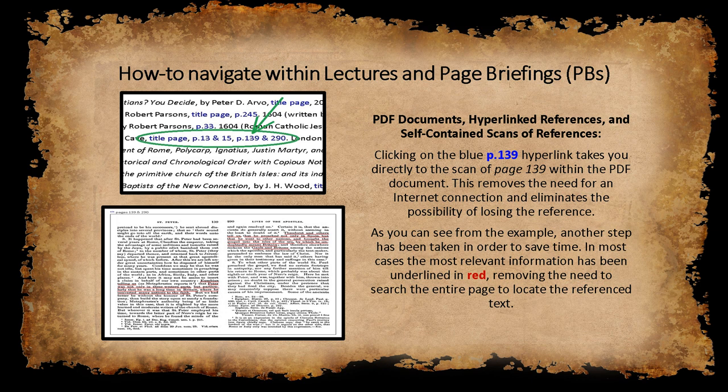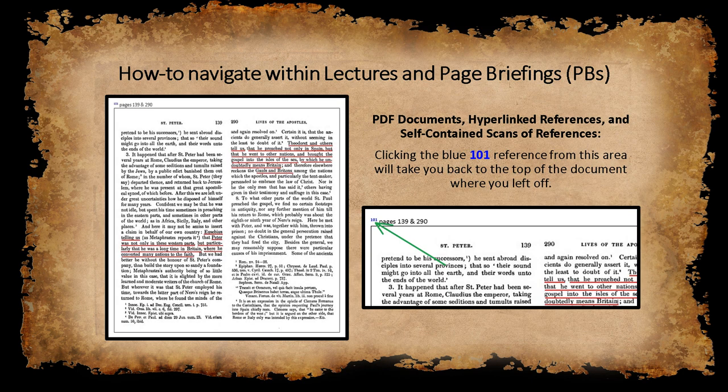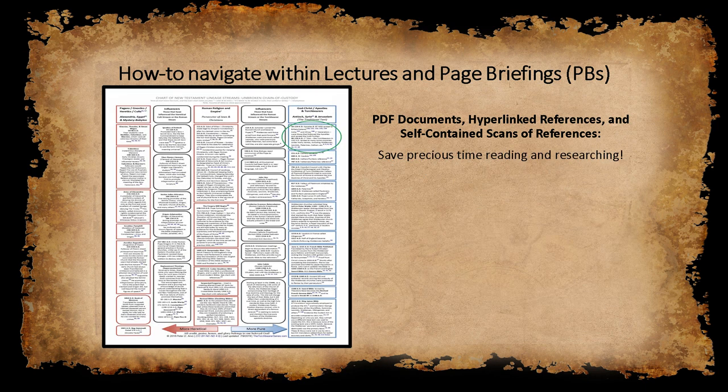As you can see from the example, another step has been taken in order to save you some time. In most cases, the most relevant information has been underlined in red, removing the need to search the entire page to locate the reference text. Just as before, clicking on the blue 101 reference number from this area will take you back to the top of the document where you left off. Returning quickly back to the top enables you to save precious time while reading and researching.